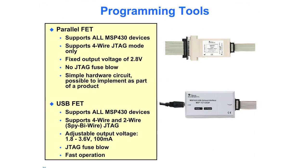TI offers two different programming tools, and there are also a wide variety of FETs — field evaluation tools — from other vendors as well. We have the parallel FET that connects to a parallel printer port on your PC. That supports all MSP430 devices but only supports 4-wire JTAG. For most people, the USB-FET, either from TI or another vendor, is the one to go with. It supports all MSP430 devices, both 4-wire and 2-wire JTAG interfaces, and selectable output voltages from 1.6 to 3.6 volts.